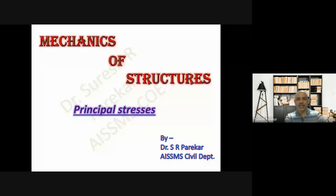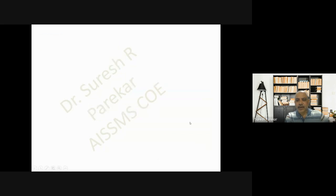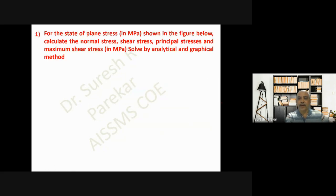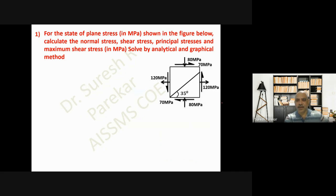Good evening. Today we are going to see one problem from principal stresses by both methods. The data given: σx = 120 MPa, σy = -80 MPa, τ = +70 MPa, and θ with vertical.